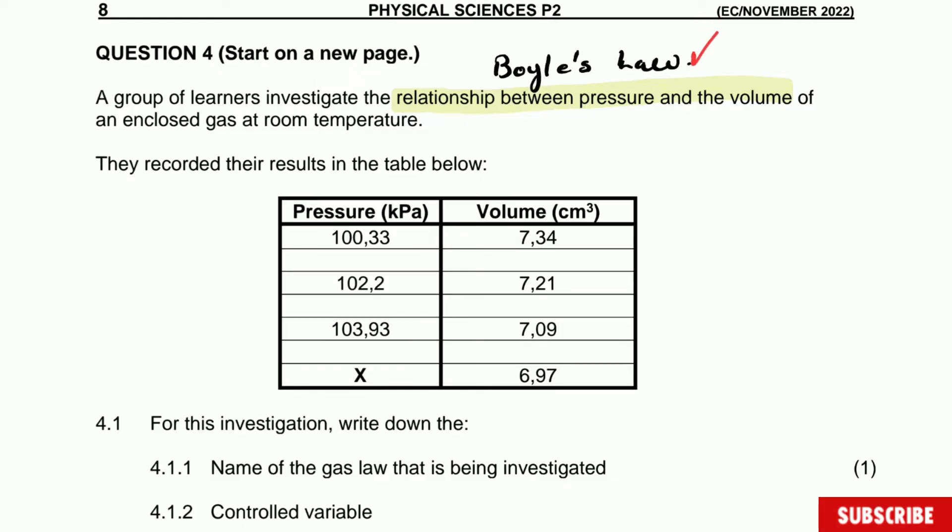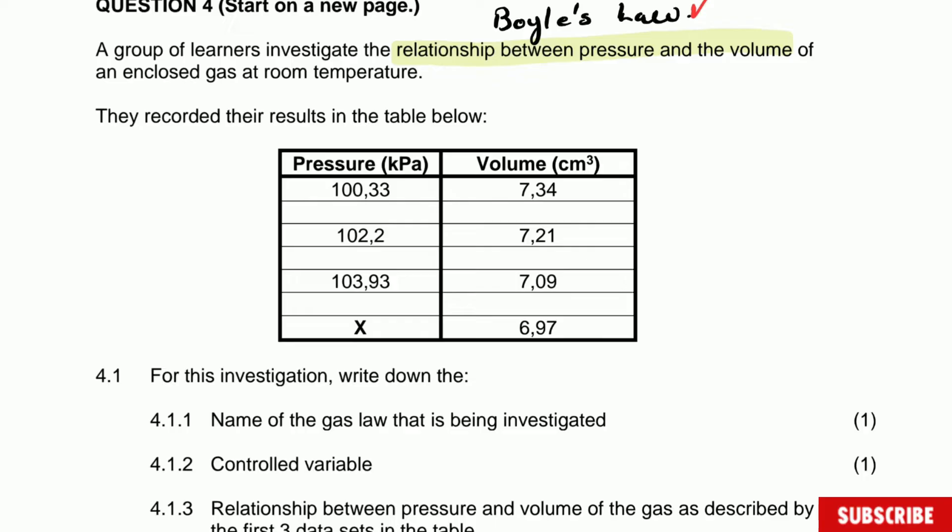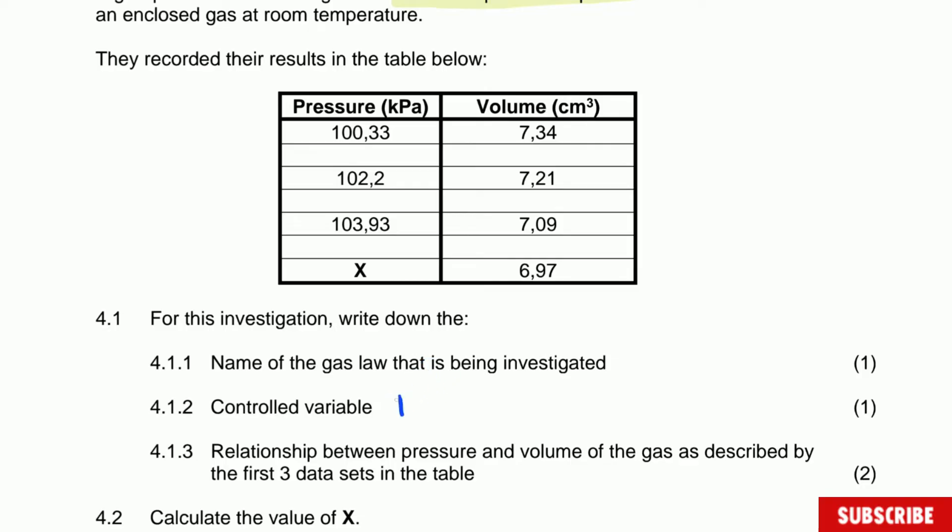The control variable is a variable that you keep constant. So what was kept constant during this investigation? There are two important things that were kept constant here. One of them is the temperature, and the other one is the amount of gas. That is the two, but they ask for one, so if you say either of them you get one mark.